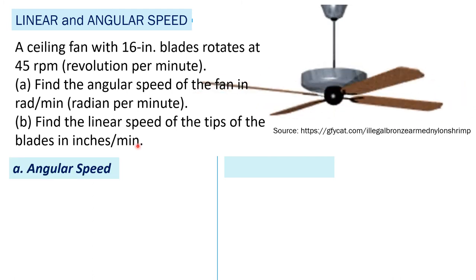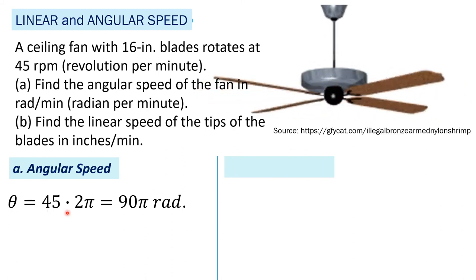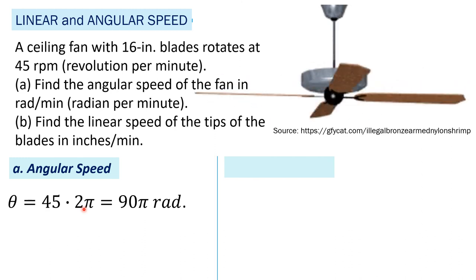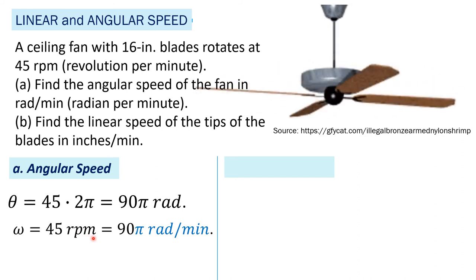For angular speed: theta equals 45 revolutions multiplied by 2 pi, giving 90 pi radians. The angular speed is 90 pi radians per minute, since the time period is one minute. That is the angular speed for the ceiling fan.